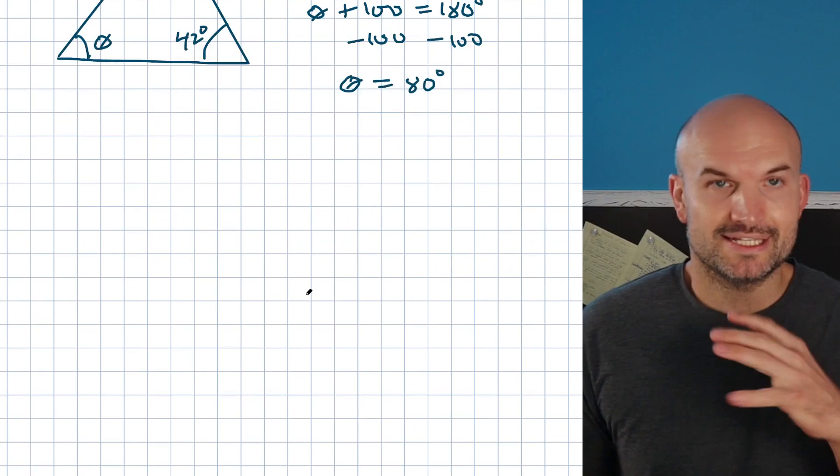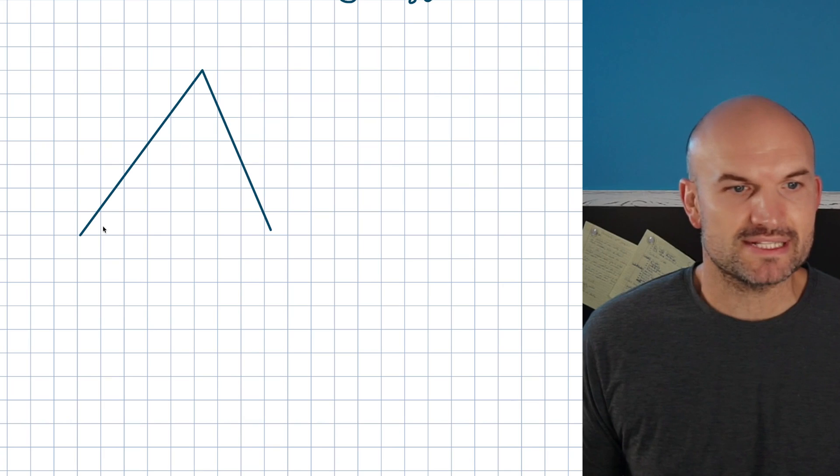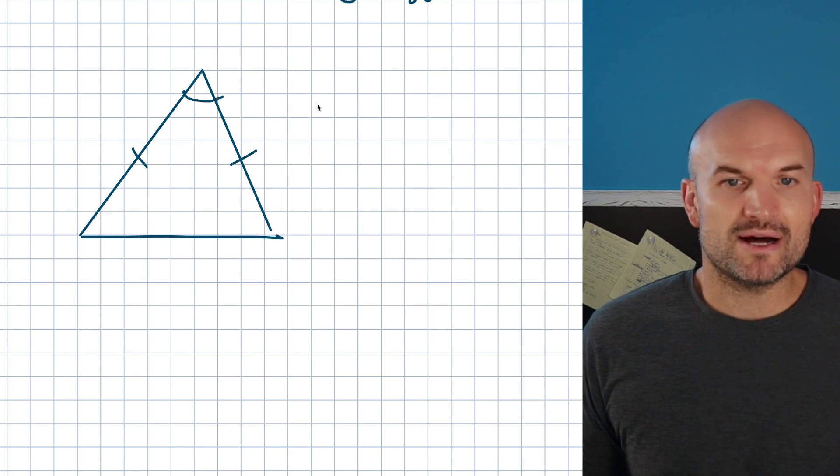Now, another property that is very helpful for us to understand would be like our equilateral and isosceles triangle. So, for instance, let's pretend that I have an angle right here, and this is going to be an isosceles triangle.